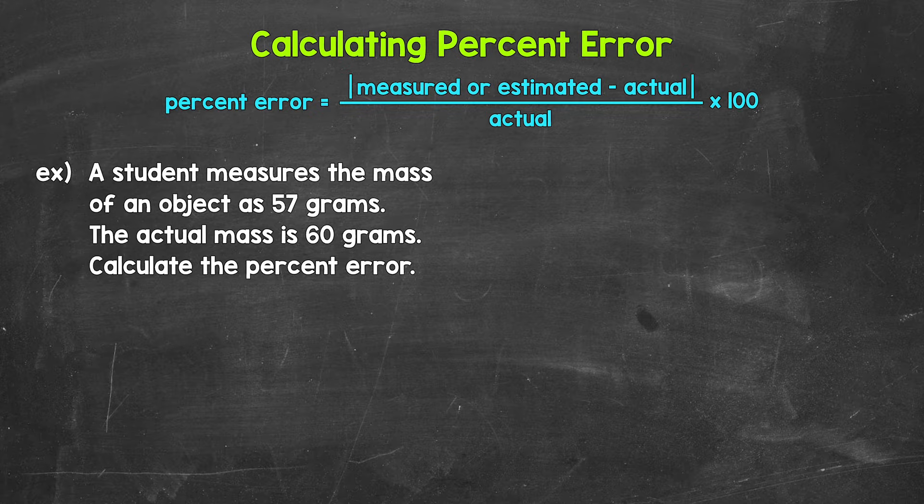Now to calculate percent error, we take the measured value or estimated value and subtract the actual value. Then we take the absolute value of that result, so if it's negative, it will turn positive. Then we divide that by the actual value. This will give us a decimal. We then multiply the decimal by 100 to convert it to a percent.